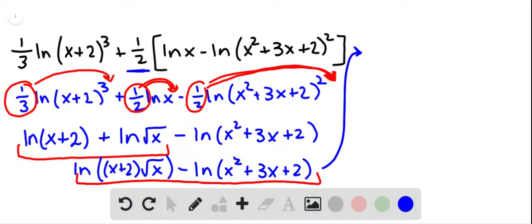So we are going to get the natural log of the quotient x plus 2 times the square root of x over x squared plus 3x plus 2.